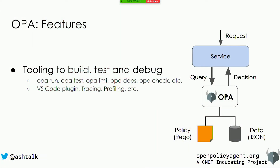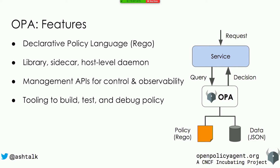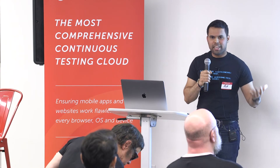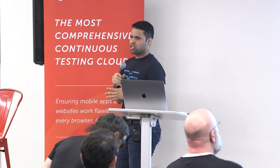Along with the core policy engine, OPA provides a rich set of tooling which allows you to test, debug, and build your policies. There is a unit test framework, a tracing functionality to see the steps involved in policy evaluation, and integrations with editors like Vim and VS Code for authoring policies. Key features include a high-level declarative language, multiple deployment models, management APIs, and a rich tooling set.